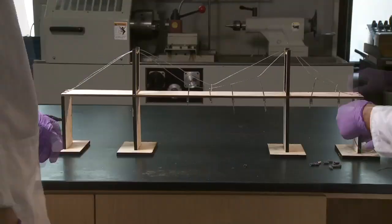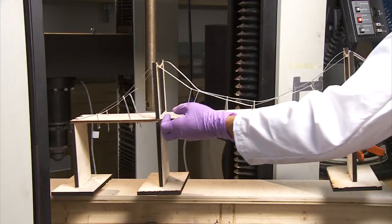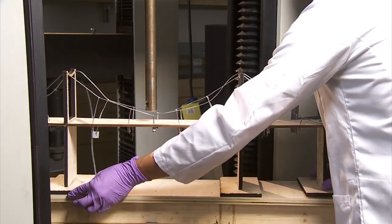In our model, we used wires for the main cables and supporting cables. Some of the construction is not ideal, because it is difficult to simulate some of the joining points and anchors on a small scale.